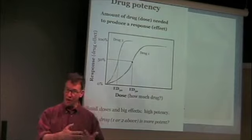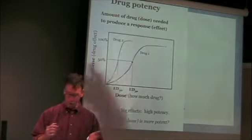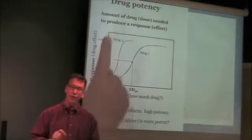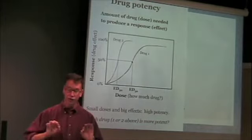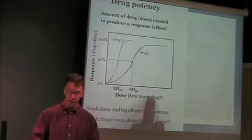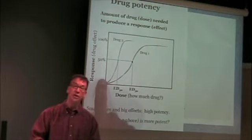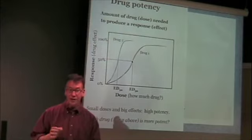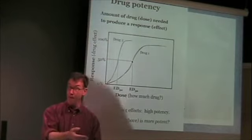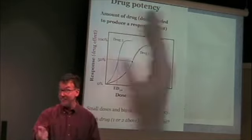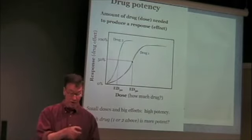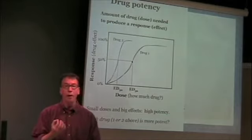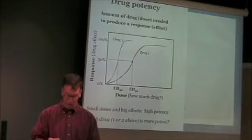Another term associated with drugs — how we can evaluate and compare drugs — is in terms of their potency. Drug potency refers to the amount of drug, the dose needed to produce a response. So if you need less of a dose of a drug to produce a response for one drug versus another, the drug at which you get the response with a smaller dose is the more potent drug — that's the drug with greater potency.